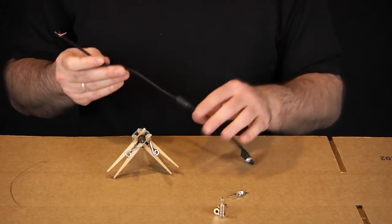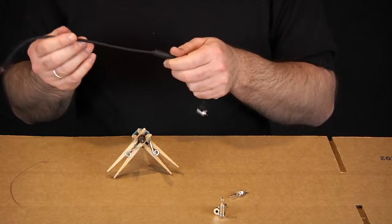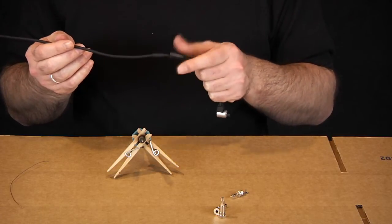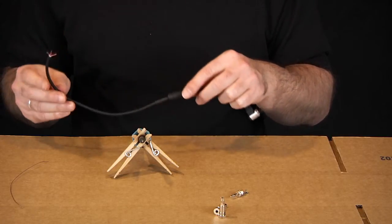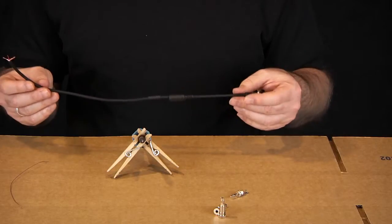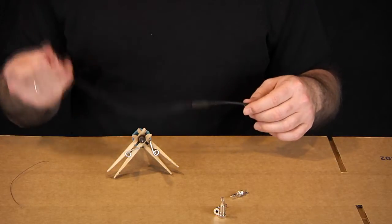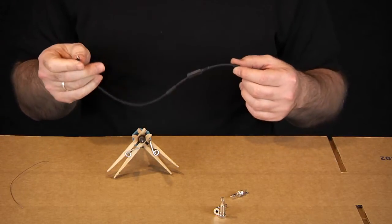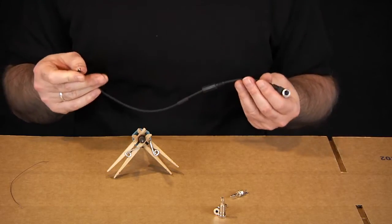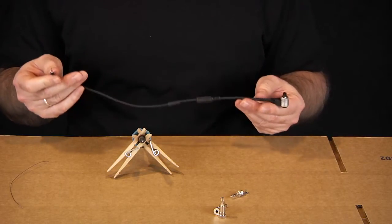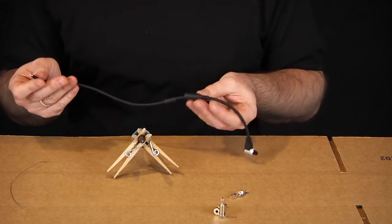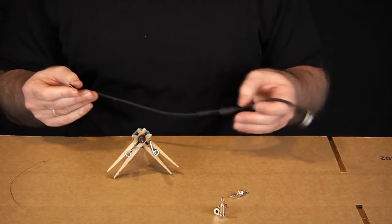Before you start soldering, you're going to want to make sure to put the ends, the plastic covers that screw onto the ends, onto your cable first. Because once you solder the ends on, you won't be able to get them on. I've done it, then you have to unsolder or cut everything back and start all over again. So make sure you put these on first before you solder your ends on.